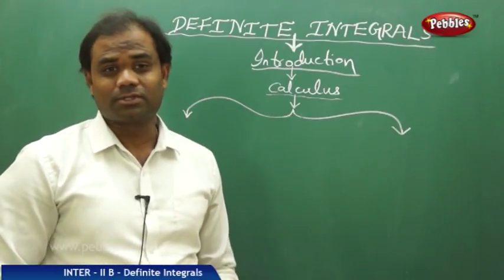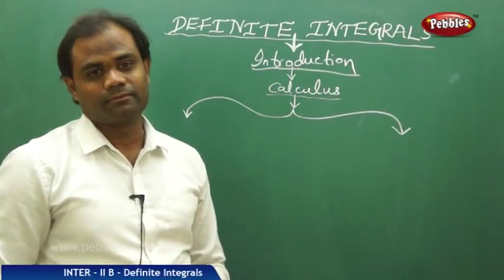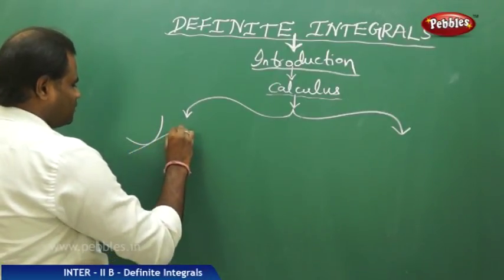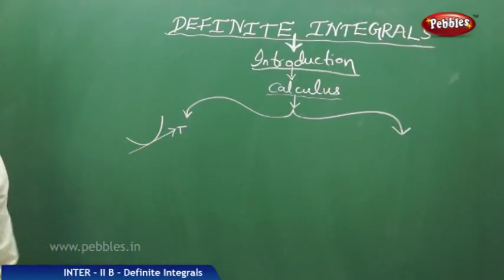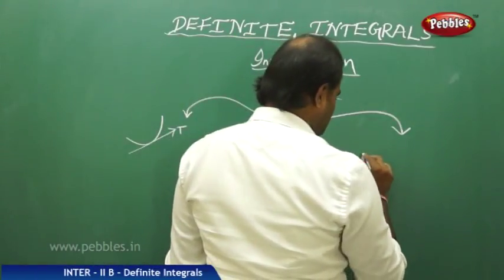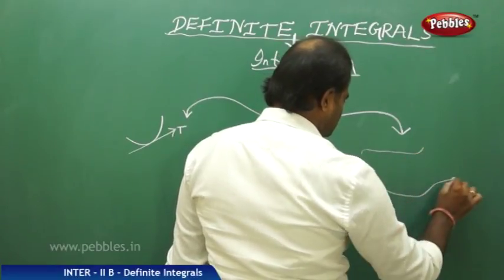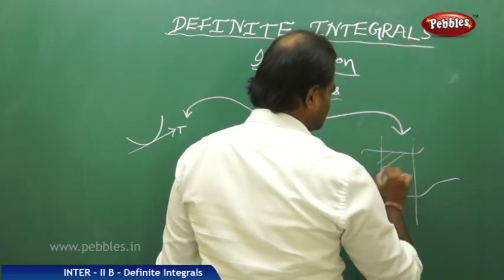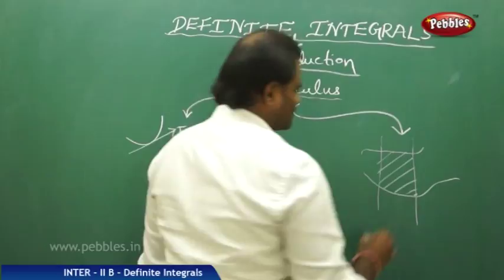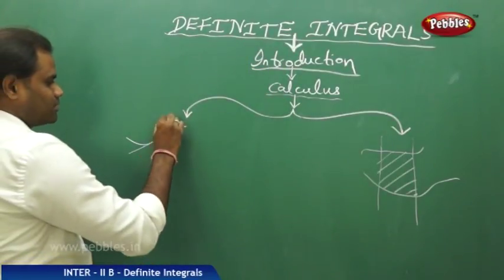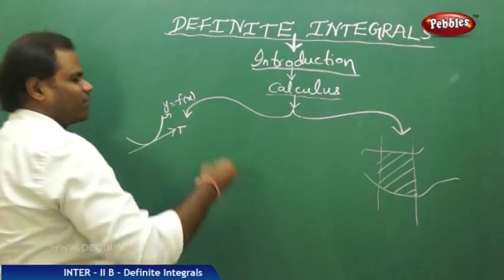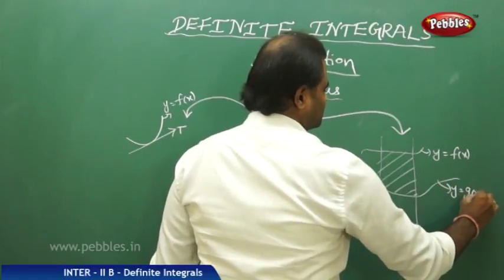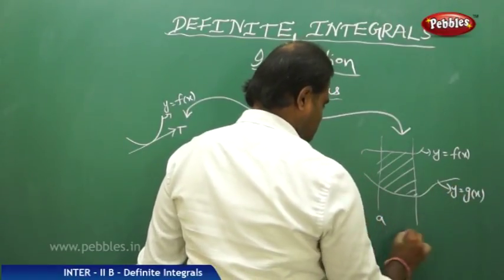One was finding the equation of the tangent of a curve — that is, given a curve, finding the equation of its tangent. The other was finding the area between curves. This is how calculus originated, where the curve is given by y equals f of x.